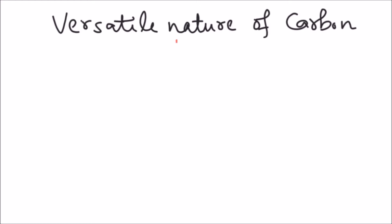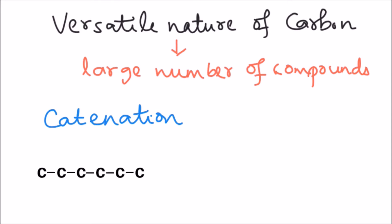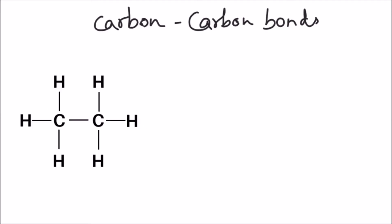Carbon has a versatile nature which allows it to form a large number of compounds. One of the versatile properties of carbon is called catenation. Catenation involves the linkage of atoms of the same element to form longer chains. Carbon can form a single straight chain, a branched chain, or even a cyclic ring.